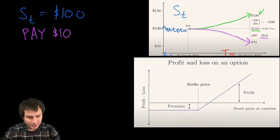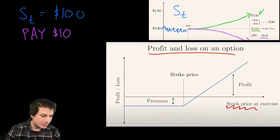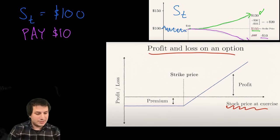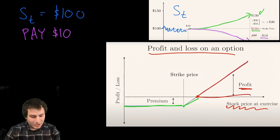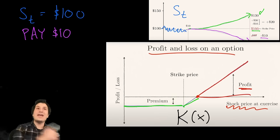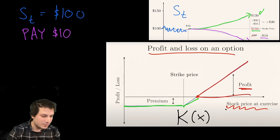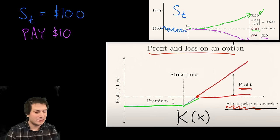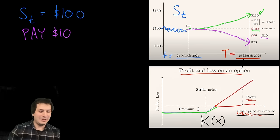The video gives a graph of profit and loss depending on the final stock price. If the stock price goes up, you make money; if it goes down, you lose money. Let's give this a name: K(x). K(x) is how much money you make when the final stock price — at exercise time capital T — equals x. So K(x) is your profit or loss at time T.